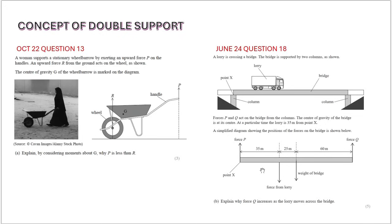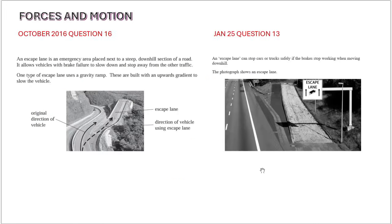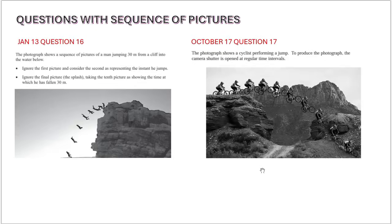And then you have the concept of double pivot which has been transferred somewhat from the IGCSEs. Moment and momentum are the two new specification content. You won't find these concepts in the previous papers prior to 2019. And you can see how similar the questions are. This is a concept from escape lane. One is from October 16, the other one is from January 25.